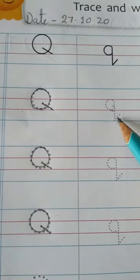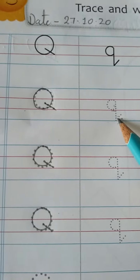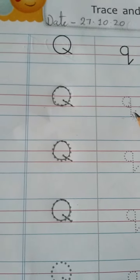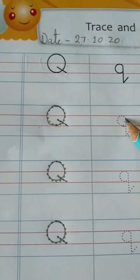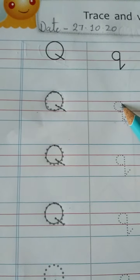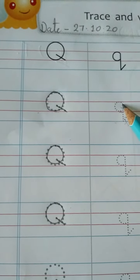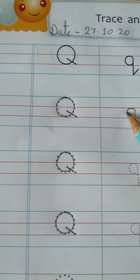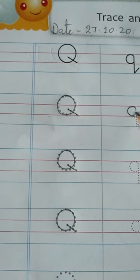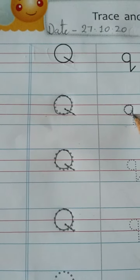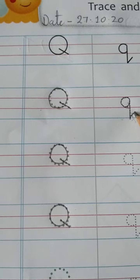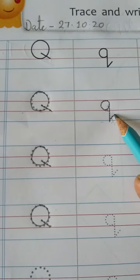This is small letter Q. Now, see the formation of Q. It starts from second line. First, you have to draw one circle, and its one slanting line, and then slanting line. This is small letter Q.